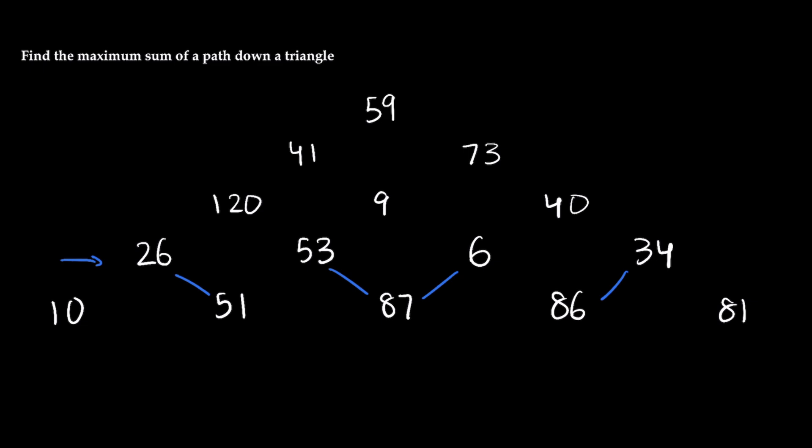And so we can sum up each of these path lengths as we have right now. So 26 plus 51 is going to be 77. And then 53 plus 87 is going to be 140. And then 6 plus 87 is going to be 93. And then 34 plus 86 is going to be 120.